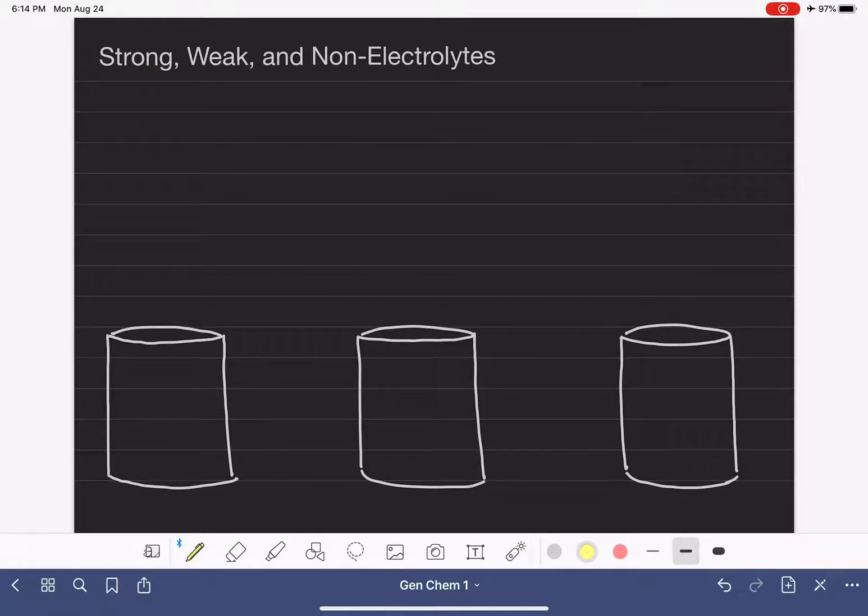Before we get started, I do want to point out that this designation—strong, weak, and non-electrolyte—only applies to solutes that are in an aqueous solution. Remember, the aqueous solution just refers to solutes that have been dissolved in water. So this is going to be our solutes that have been dissolved in a solution where water is the solvent.